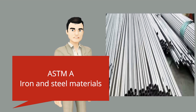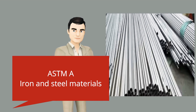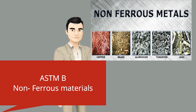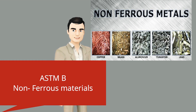ASTM A is used for ferrous steel materials, like rebar. ASTM B is used for non-ferrous materials, like copper and aluminium.